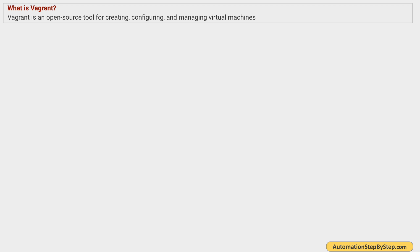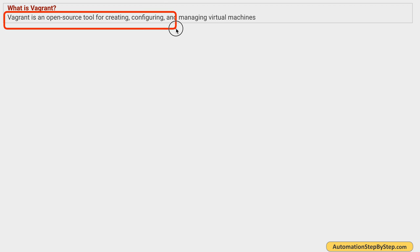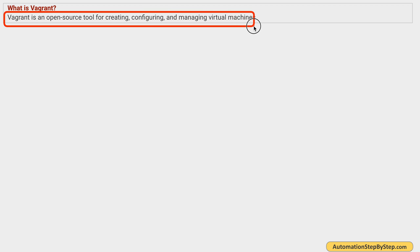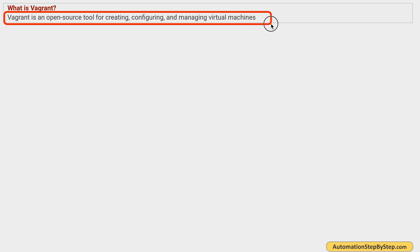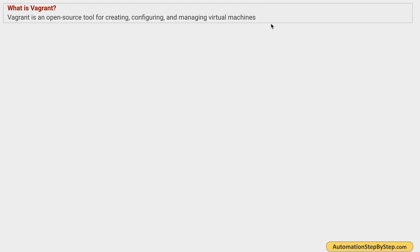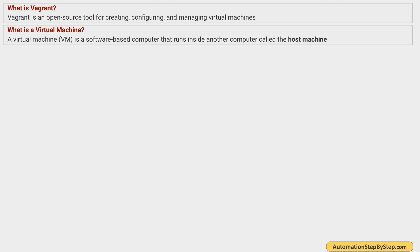So let's start from the very basics. What is Vagrant? Vagrant is a free and open source tool that can be used for configuring and managing virtual machines. With Vagrant, you can define the configuration of one or multiple virtual machines in a file called Vagrantfile, and using that you can set up and manage multiple virtual machines using Vagrant commands.